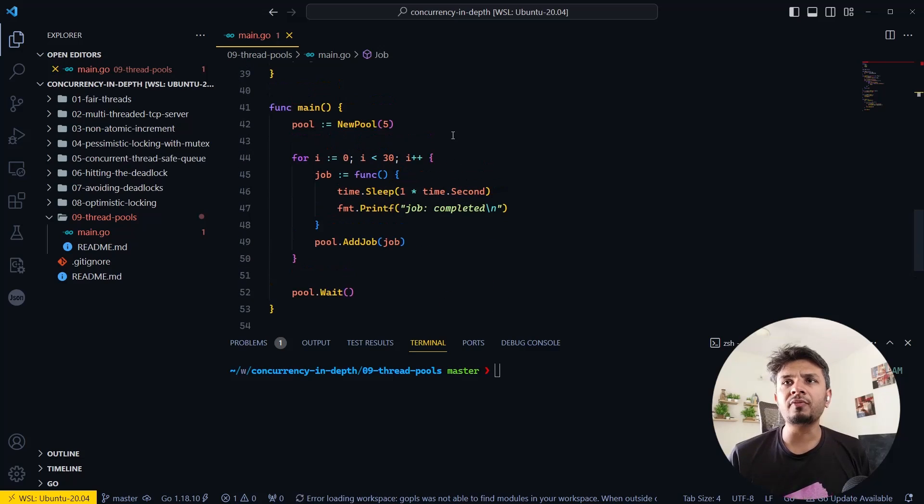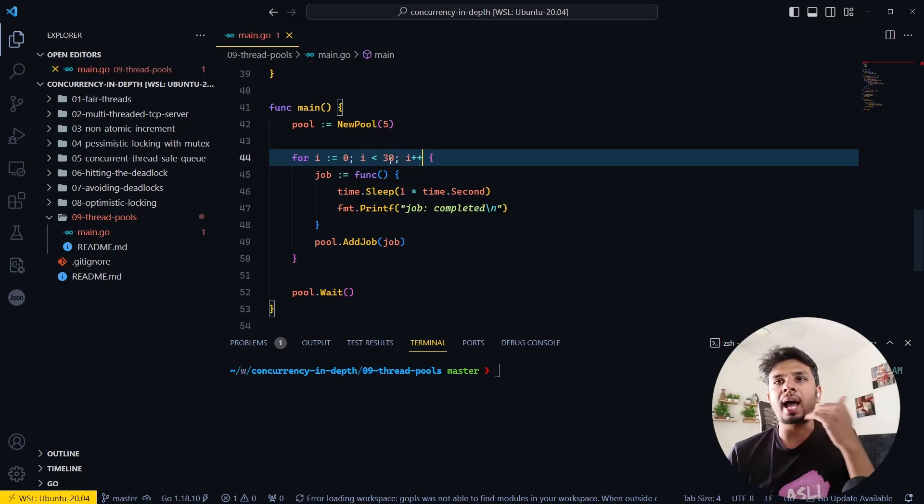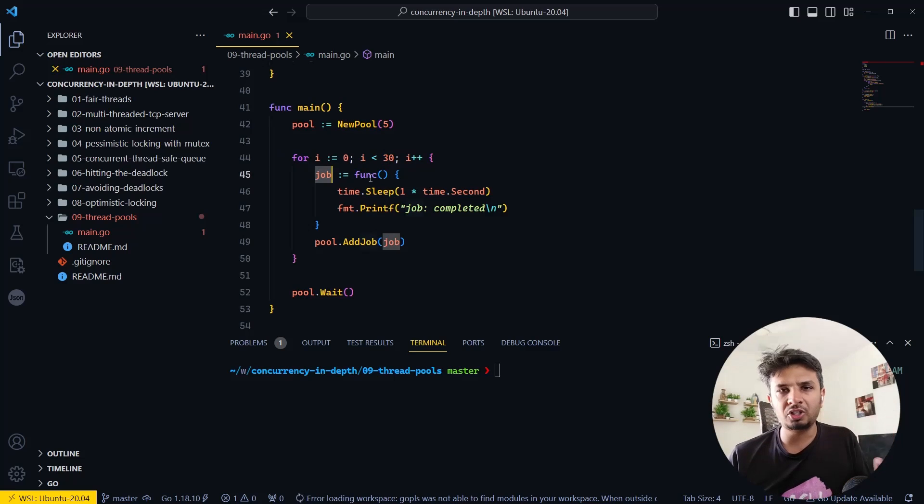Starting from the main function, what I'm doing is I'm creating a pool of five. I'm implementing the pool from scratch, so I'm defining a pool of length five, which means at max I'll have five threads.